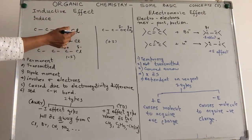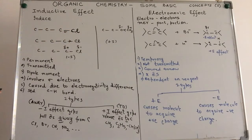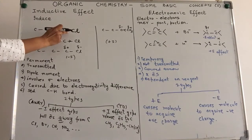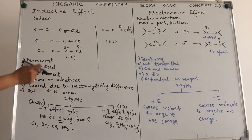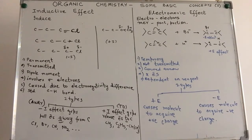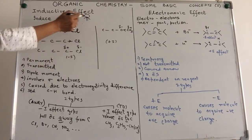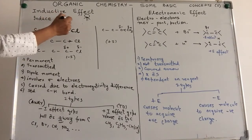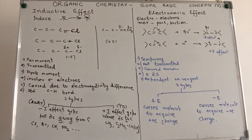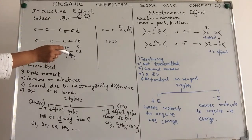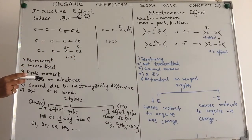Here we have taken a very simple example — chlorine. It's a highly electronegative atom. It tries to pull the sigma pair of electrons towards itself. In the process, there is no complete transfer. It's just that the electron cloud is concentrated more towards chlorine. It is just like two children having a tug of war where one is stronger and able to pull the rope more towards himself — but we are not talking about the rope completely moving towards the chlorine atom.